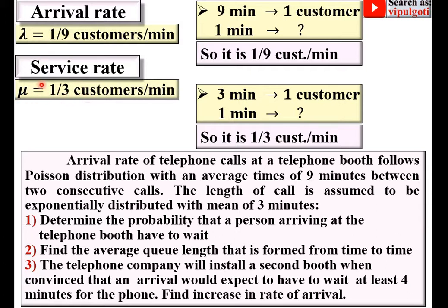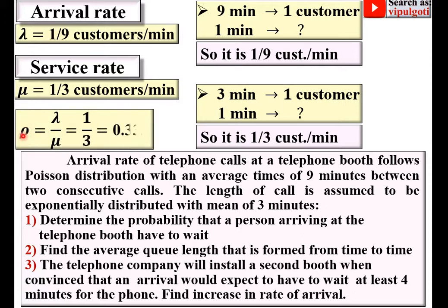Once we have mu and lambda, we find the utilization factor rho, which is lambda divided by mu. Putting both values into this equation and simplifying gives rho = 0.333.